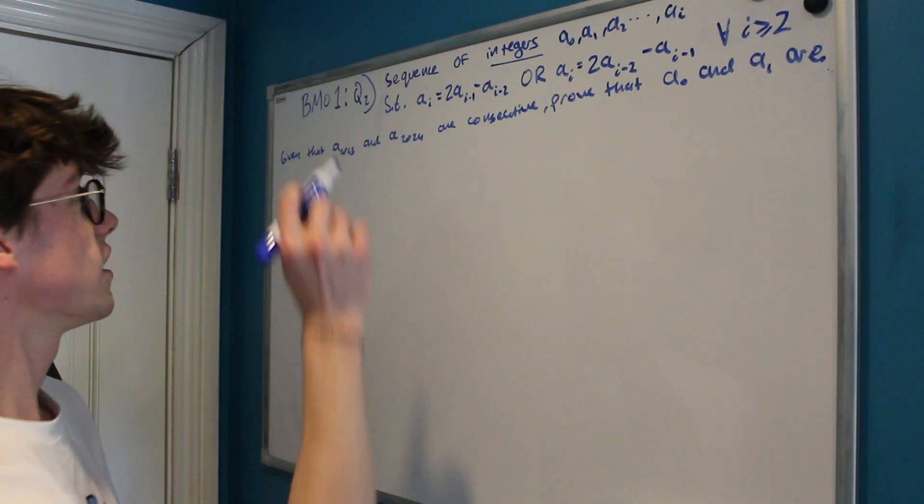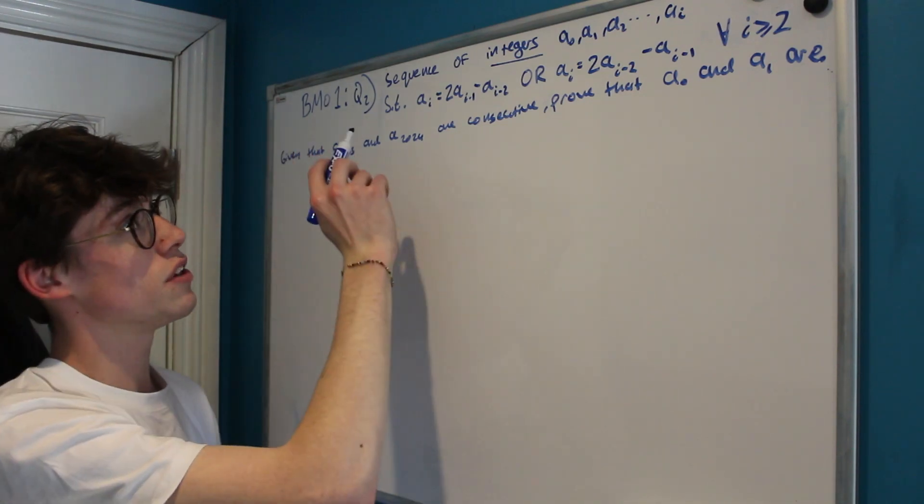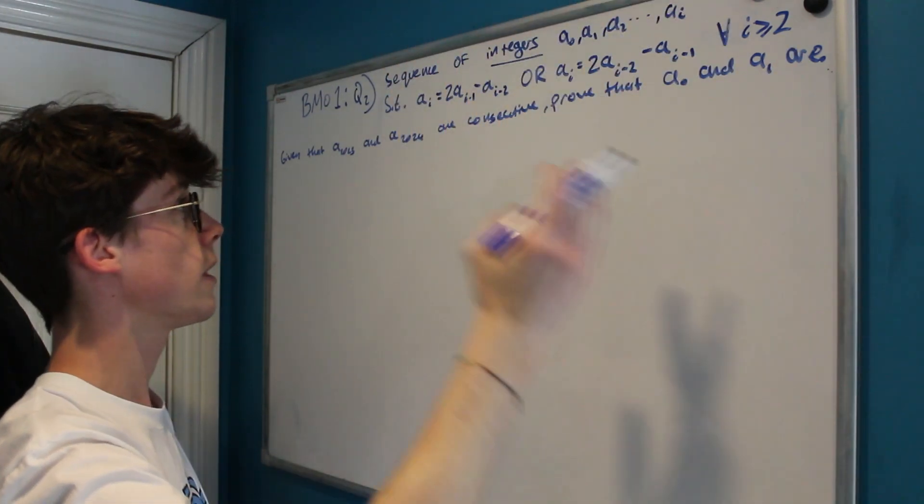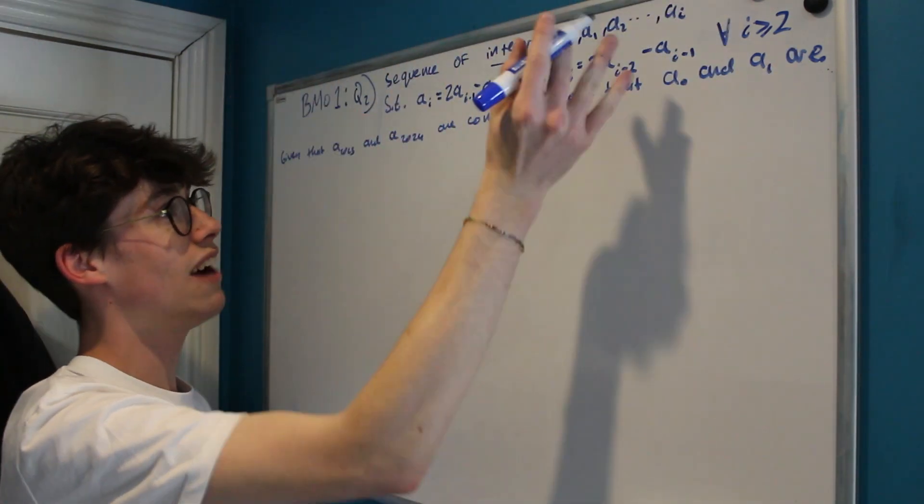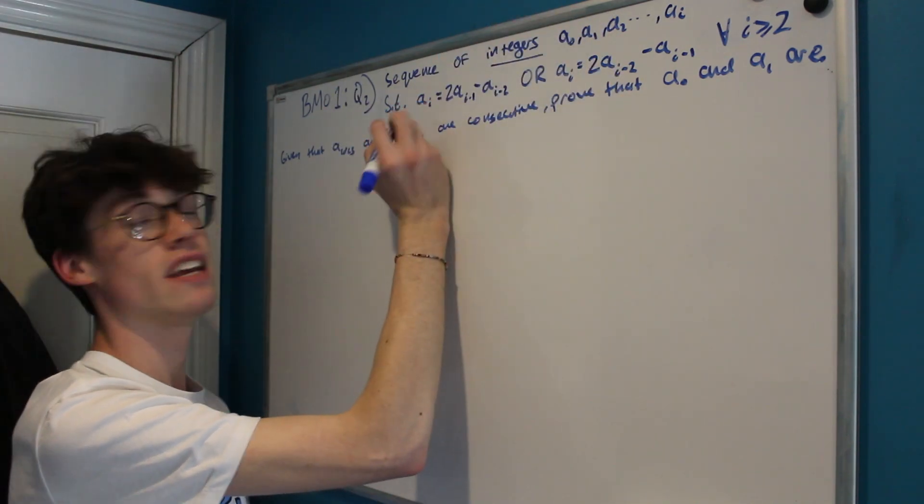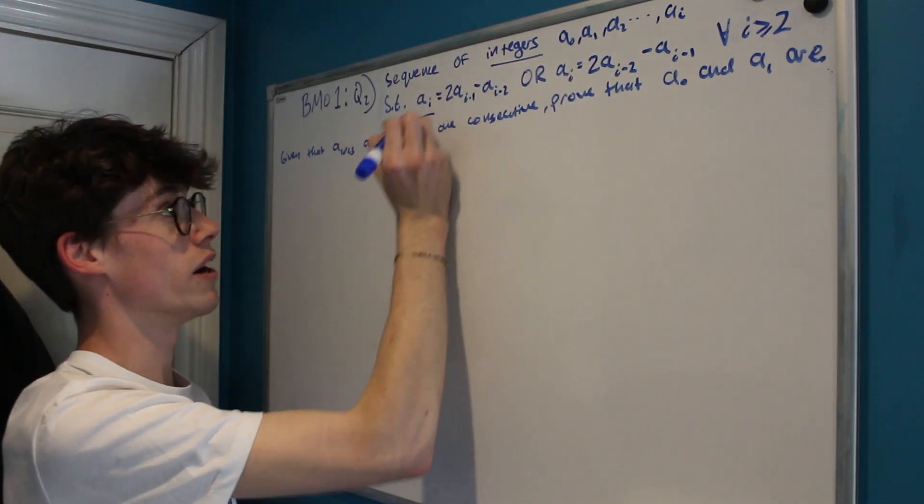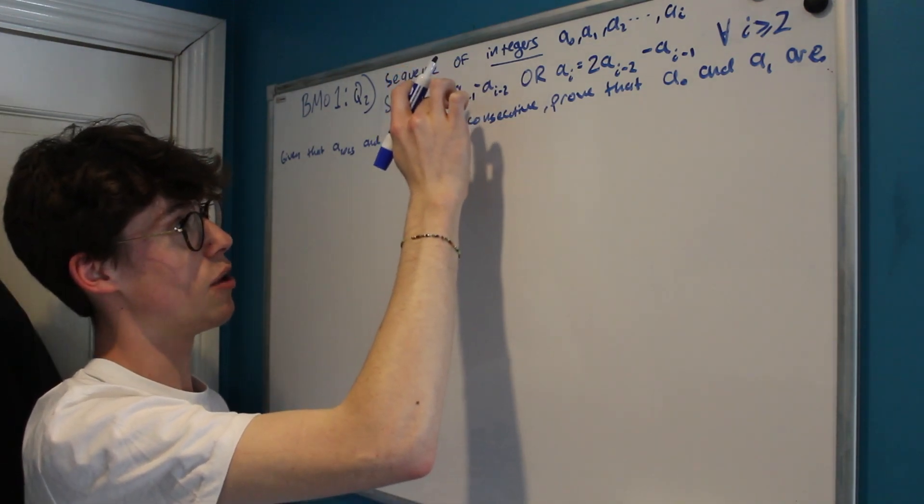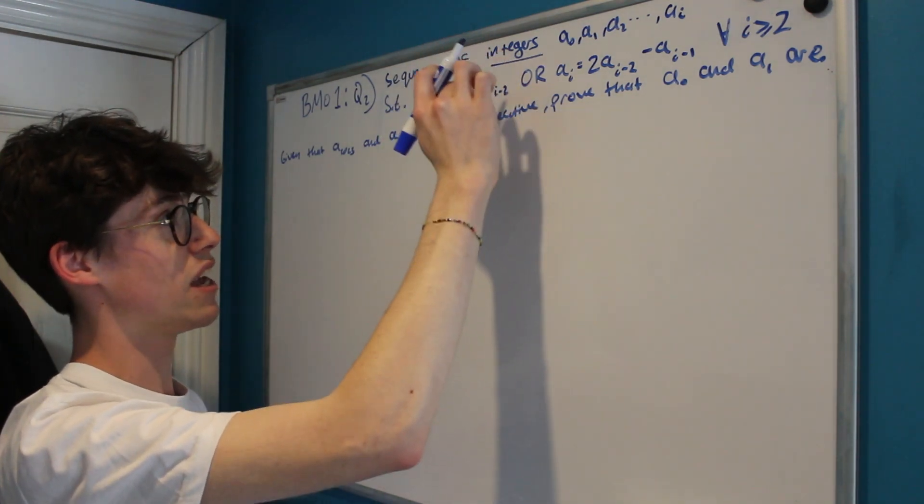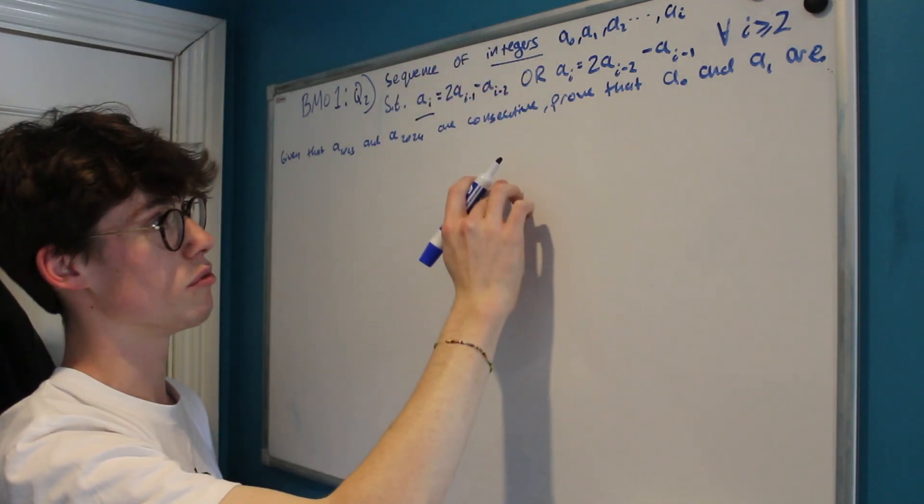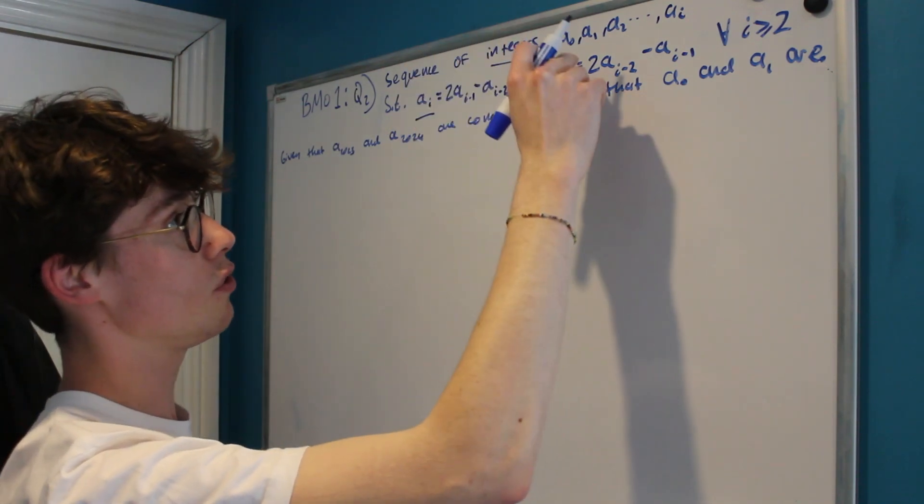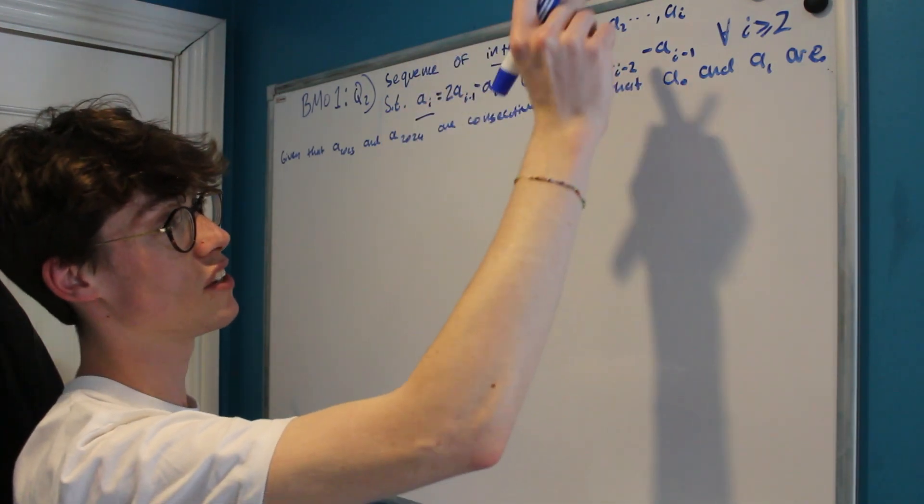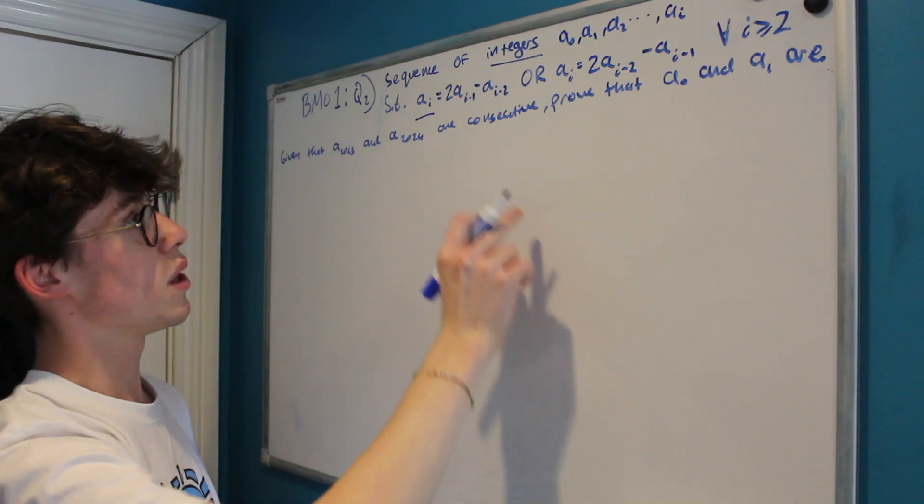So I'll read to you what the question is. It says that we have a sequence of integers starting at a0 and continuing as a1 and a2 all the way up to ai, and we have these integers such that for any given term in our sequence ai either ai is equal to 2 times ai minus 1, which is the term before it, minus ai minus 2, which is the term 2 times before it.